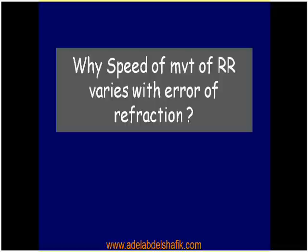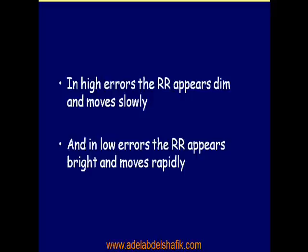The speed of movement of the red reflex varies with the error of refraction. In higher degrees of error, the red reflex appears dim and moves slowly. In low errors of refraction, the red reflex appears bright and moves rapidly.